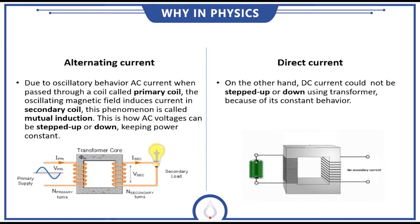First of all, the oscillatory behavior allows AC current to be stepped up or stepped down using a transformer. This is basically the phenomenon which is called mutual induction. When a current is passed through a primary coil, it induces the current in another coil which is called secondary coil, and in this way current or voltages are stepped up or stepped down. That's why AC is more reliable than DC.